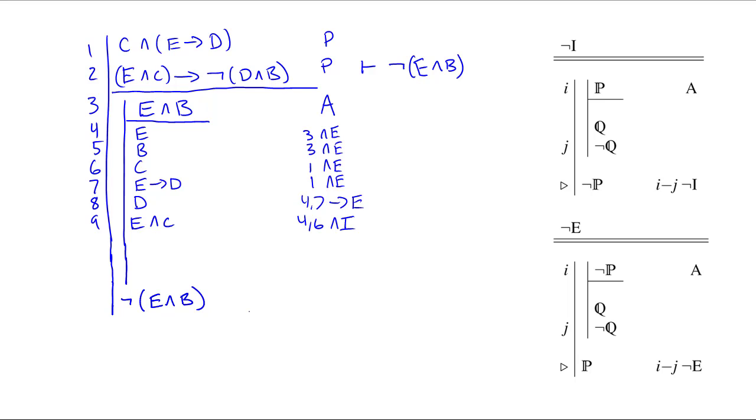Now, with the conjunction I have in line 9, since it matches the antecedent of line 2, I can use an arrow elimination to derive the consequent of line 2, which is not parenthesis D and B by arrow elimination. Now, it turns out that in line 5, I have a B, and in line 8, I have a D, so I can put those together into a conjunction D and B. So again, that's 5 and 8 conjunction or AND introduction.